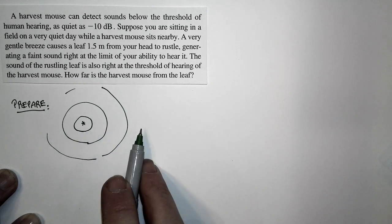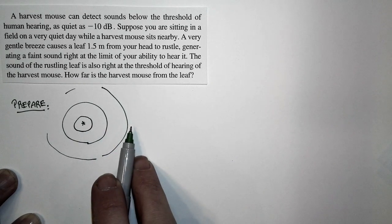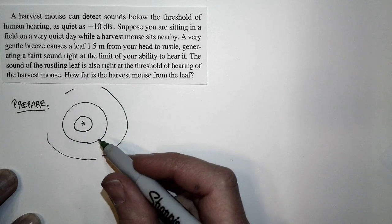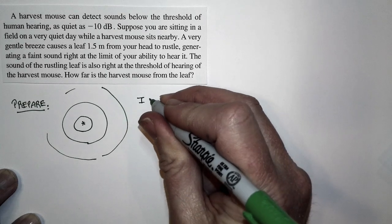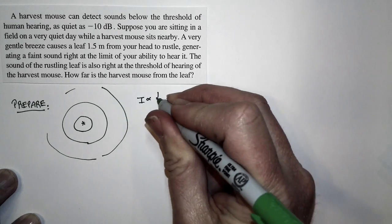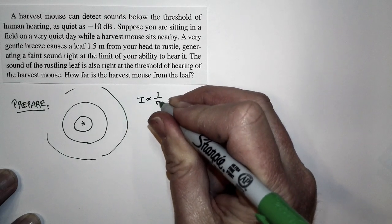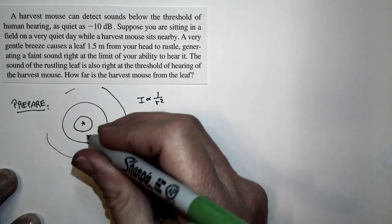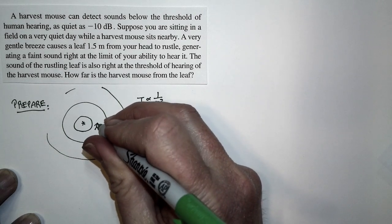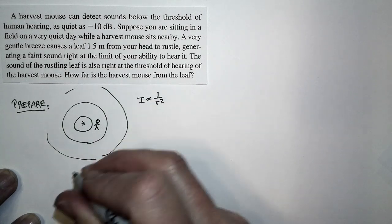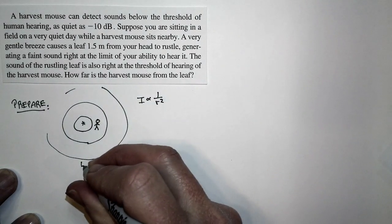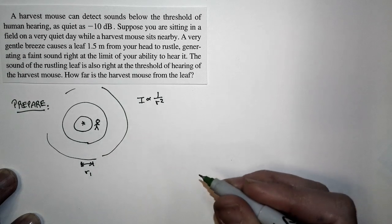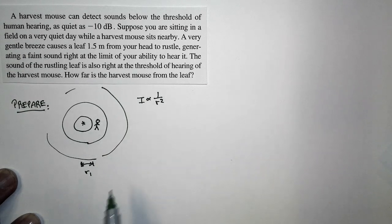Now as the waves spread out, we know their intensity decreases as one over the square of the distance. And so you are at some distance from the leaf — let's call that a distance R1. That's your distance R1 from the leaf.